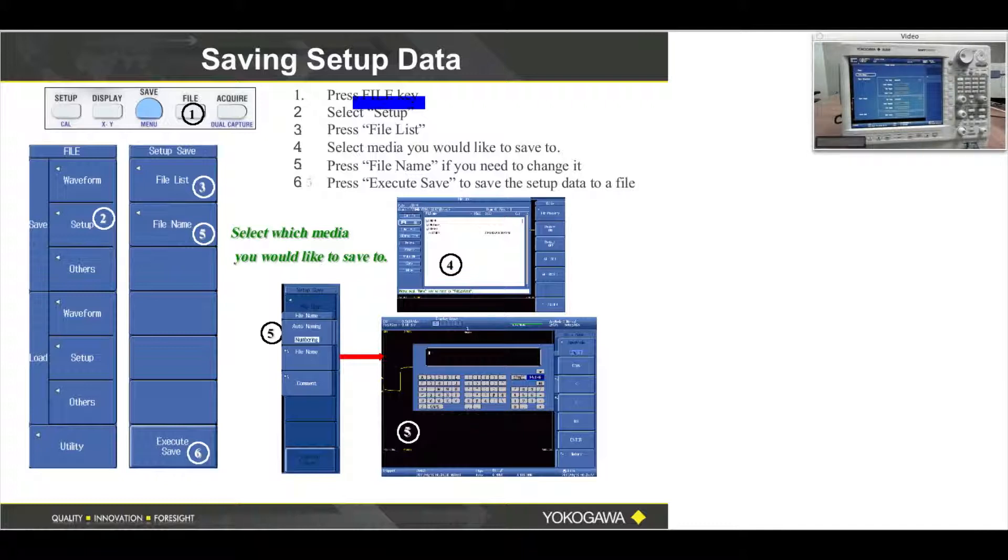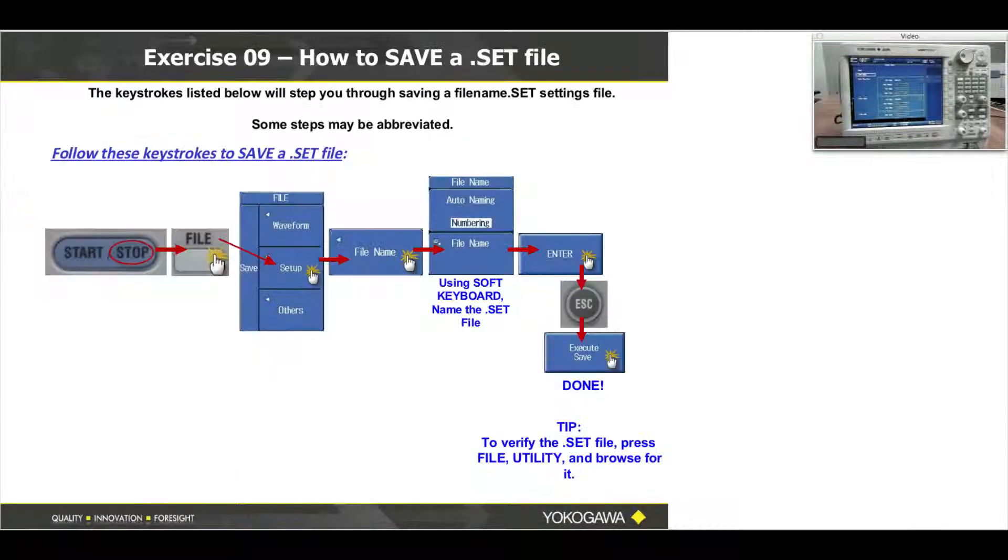A binary waveform or a setup data file—it's the same exercise really. You're saying I want to save a file, this type of file (setup file or waveform file or image file), then I want to save it to this source. The thing you have to do with the thumb drive is tell it to save to the USB thumb drive.